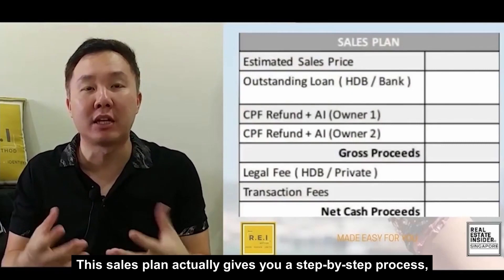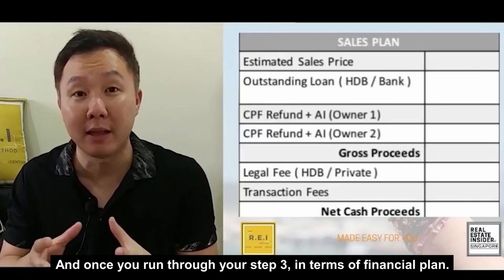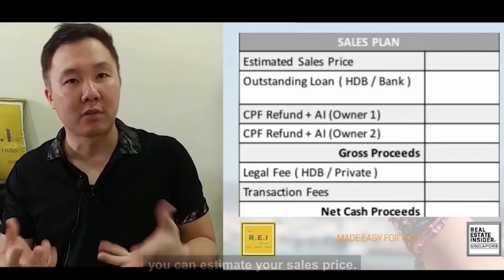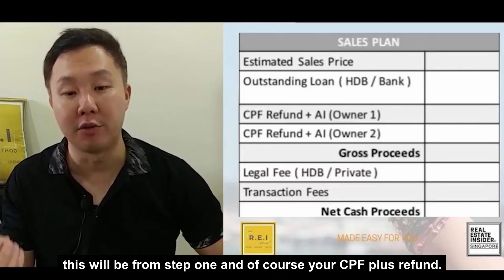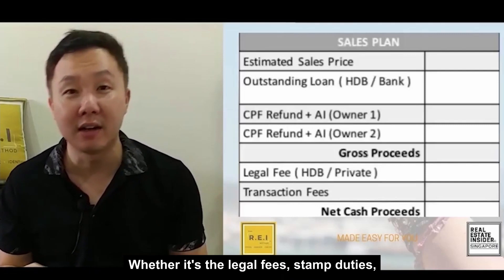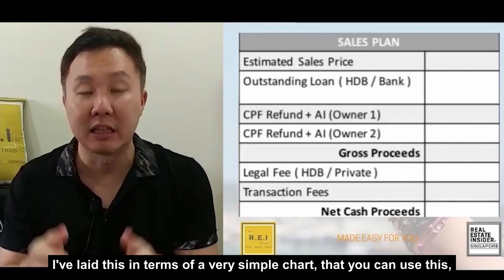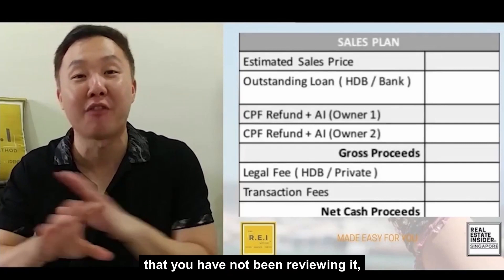Once you go through step three in terms of financial planning, you can use this as a guideline. First, you can estimate your sales price, which can be determined from step two. Your outstanding loan, whether HDB or bank, comes from step one. Your CPF plus refund — meaning the accrued interest that has been accumulated — all goes back into your CPF. There will also be admin costs involved: legal fees, stamp duties, and transaction fees. I've laid this out in a simple chart so you can factor in all this information. Take the time to dig out this old information and put it into this template, and it will help you determine your net cash proceeds.